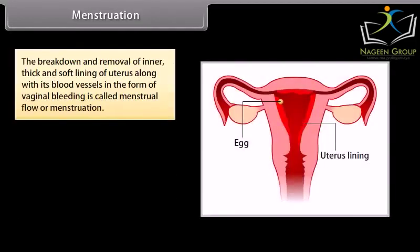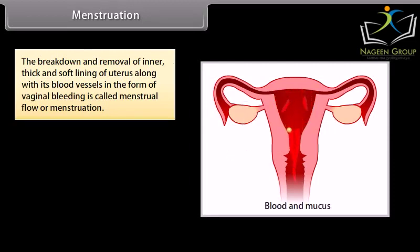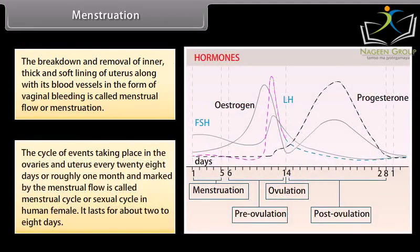Menstruation is the breakdown and removal of the inner thick and soft lining of the uterus, along with its blood vessels, in the form of vaginal bleeding, called menstrual flow. The cycle of events taking place in the ovaries and uterus every 28 days, or roughly one month, marked by the menstrual flow, is called the menstrual cycle or sexual cycle. In human females it lasts for about two to eight days.